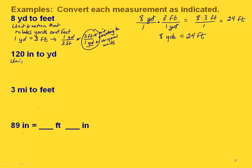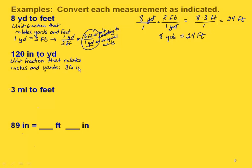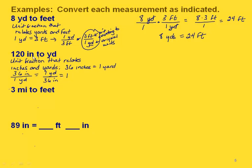Let's convert 120 inches to yards. This unit fraction isn't directly in our list, but we can figure one out. We need a unit fraction that relates inches and yards. We know that 36 inches equals 1 yard, so we can make a unit fraction relating these two. Since we know these two are equal, we can write either 36 inches over 1 yard, or 1 yard over 36 inches — either way, this equals 1.